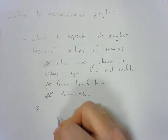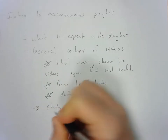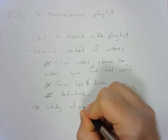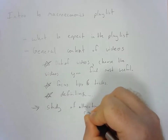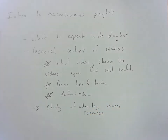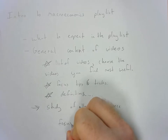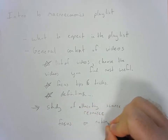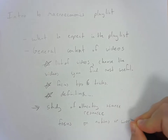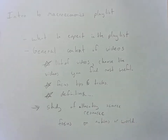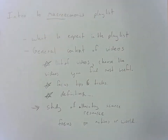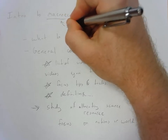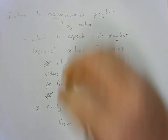Now I want to focus briefly on just an intro to macroeconomics. You can think of macroeconomics as the study of allocating scarce resources, but in this case we're focusing on the national or world view. We'll be focusing on things like unemployment, interest rates, and GDP, which is how much nations produce. So when you see the word macro in macroeconomics, think of the big picture — the whole world, the whole nation, that sort of thing.